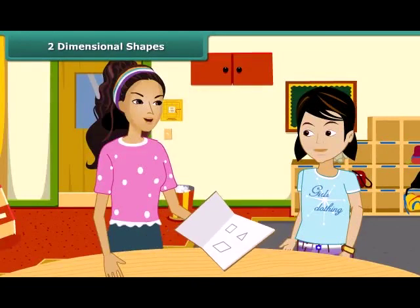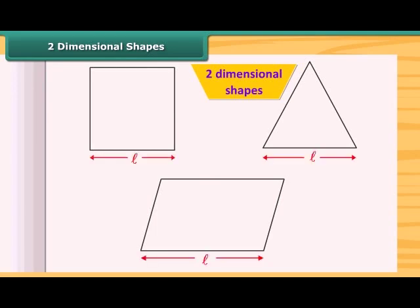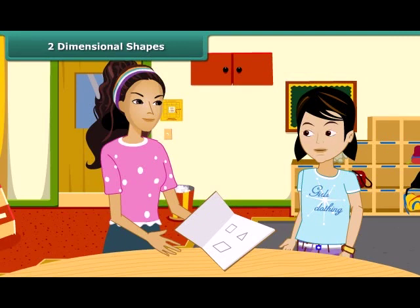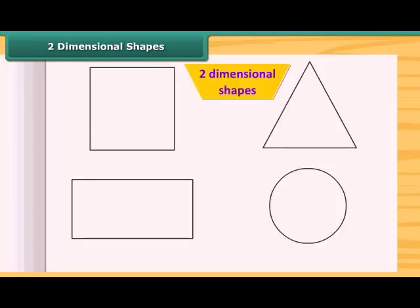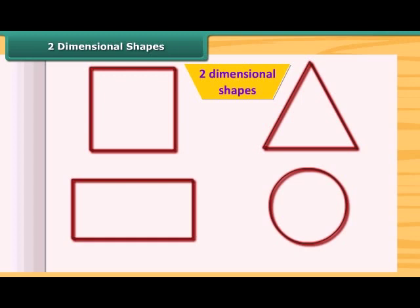Look at these shapes. These are all two-dimensional shapes. They have only two measurements, length and breadth. You mean all the shapes that we draw in our notebook are two-dimensional? Yes, you are right. All those shapes that we can draw on paper and which have only two measurements are two-dimensional shapes. A square, rectangle, triangle, circle, etc. are the examples of two-dimensional shapes.